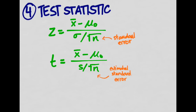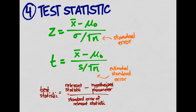The general formula for a test statistic is: the relevant statistic (usually the sample mean) minus our hypothesized population parameter, over the standard error of that statistic. If we know the standard deviation we use the standard error; if not, we use the estimated standard error. That's our test statistic.